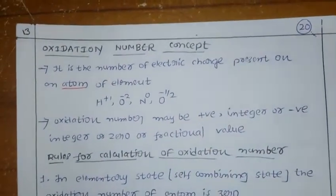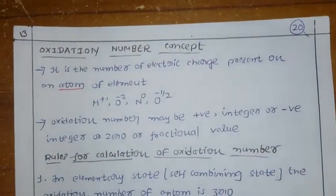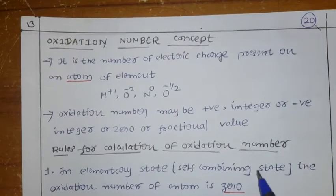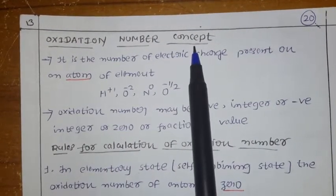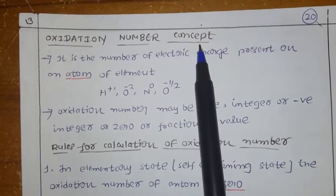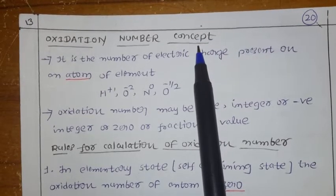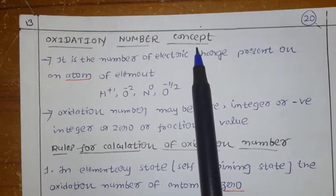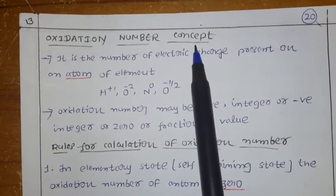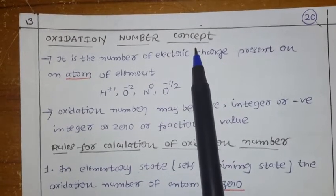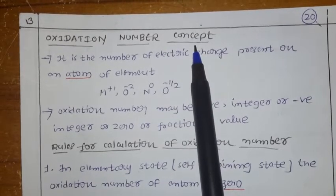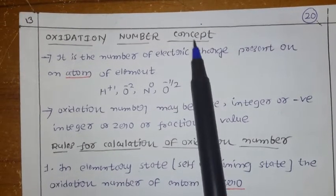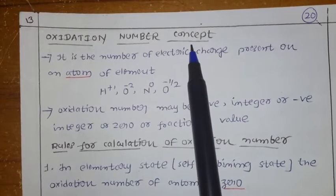Hello students. In the last video we discussed the limiting reagent. Now let us discuss the oxidation number concept. This is a very important topic because after this concept we have a few concepts — that is balancing of ionic equations. For that we need these concepts; we should be very clear about these concepts.